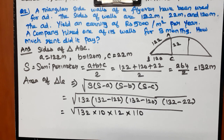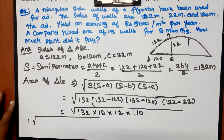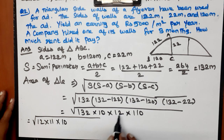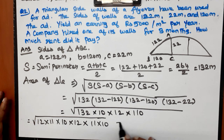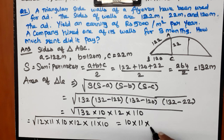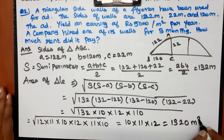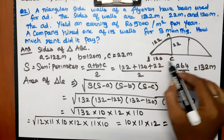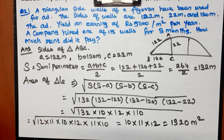We simplify the expression under the square root. Breaking it down: 132 = 12 × 11, 10 = 10, 12 = 12, 110 = 11 × 10. So the product becomes 10 × 11 × 12 × 12 × 11 × 10, which simplifies to give √(1320²) — the area is 1320 m².